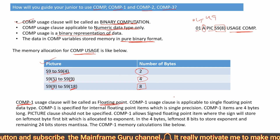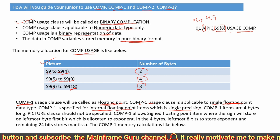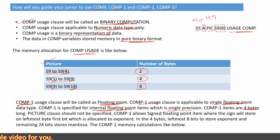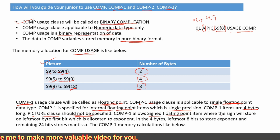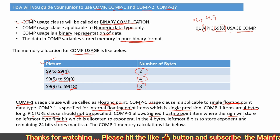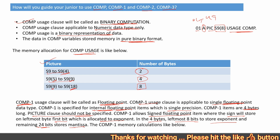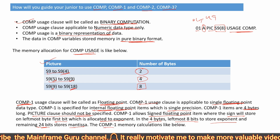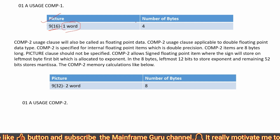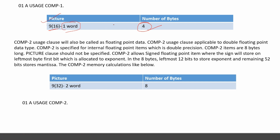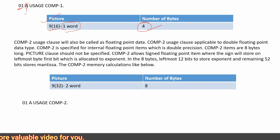COMP-1 is also called floating point and is applicable to single floating point. It is specified for internal floating point items with single precision. COMP-1 items are 4 bytes long and PIC clause is not required for COMP-1 variables. COMP-1 allows signed floating point items where the sign is stored on the leftmost byte. In the 4-byte structure, the leftmost 8 bits store the exponent and the remaining 24 bits store the mantissa. The level number can be 01 to 49, followed by variable name and USAGE COMP-1.